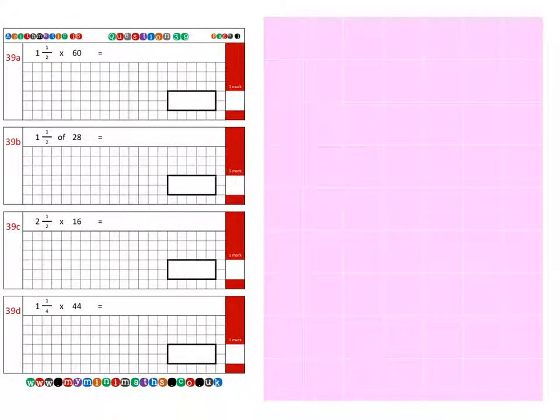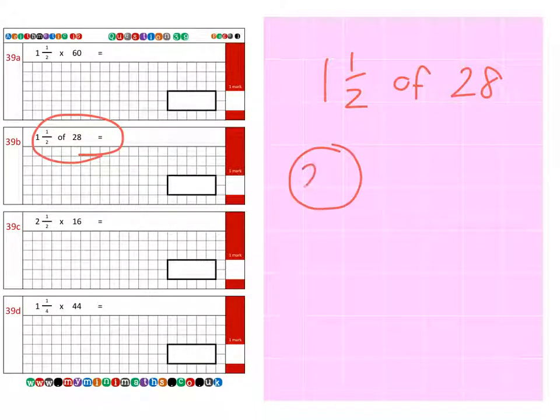Next is question 39B where we have one and a half bags of 28 sweets. So if I take my first bag of 28 and then I have half a bag which is 14, we have a grand total of 42 sweets.